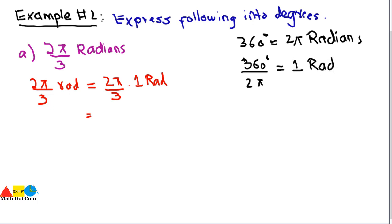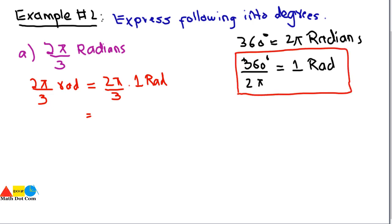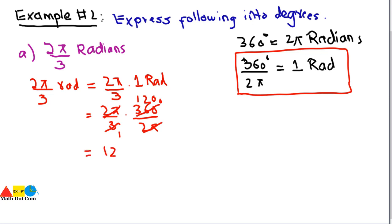So 2π/3 radians equals 2π/3 × (360 degrees / 2π). The 2π cancels out, and simplifying 360/3 gives 120 degrees. Hence, 2π/3 radians equals 120 degrees.